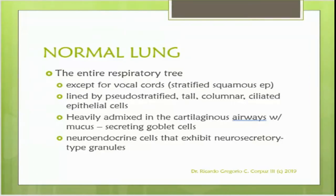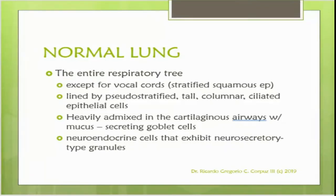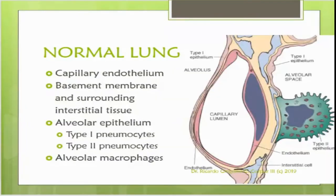All of the respiratory tree is lined by pseudostratified tall columnar ciliated epithelial cells, heavily admixed with cartilaginous airways with mucus-secreting goblet cells at the upper portion. Neuroendocrine cells exhibit neurosecretory granules — this is why, when there is malignancy like small cell carcinoma, it secretes some of the secretory endocrine products, like catecholamines.